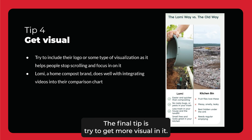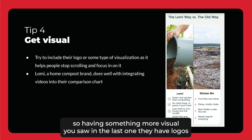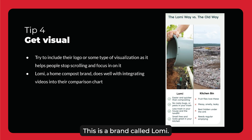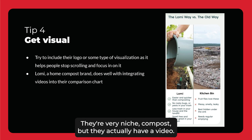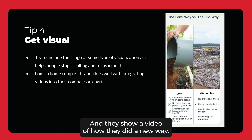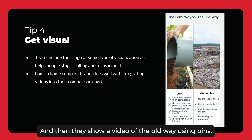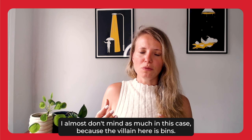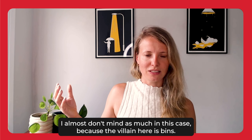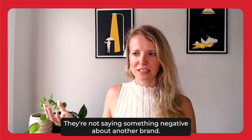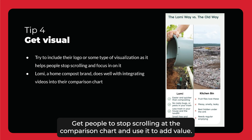The final tip is: try to get more visual. You really want people to stop scrolling at this point, so having something more visual is key — like logos or some type of visualization, as you saw in the last example. This is a brand called Lumi, a very niche compost brand, and they actually have a video in their comparison chart — and this is the mobile version. It stretches nicely on mobile, and they show a video of how they do it the new way versus a video of the old way using bins. Here they do mark every single feature negatively for bins, which I almost don't mind because the villain here is bins and no one's team bins. They're not saying something negative about another brand. This is a really great way to visualize it, get people to stop scrolling, and use the chart to add value.